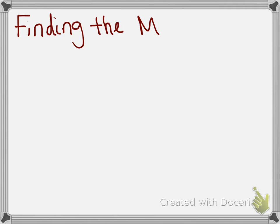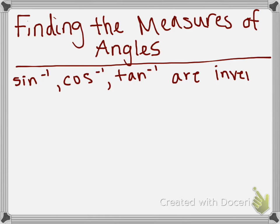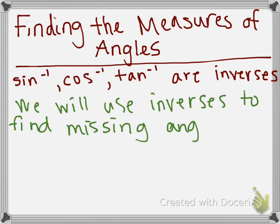The next thing we are going to do is find the measures of some different angles. For this, we are going to use what I have listed here: sine to the negative one, cosine to the negative one, and tangent to the negative one. We don't read that as 'to the negative one' — instead, we read that as the inverse of sine, the inverse of cosine, and the inverse of tangent. We will use these inverses to find missing angles.